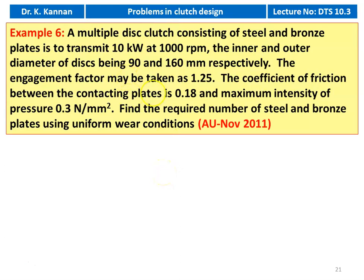A multiple disc clutch consisting of steel and bronze plates is to transmit 10 kW at 1000 rpm. The inner and outer diameter of the disc are 90 and 160 mm respectively. The engagement factor may be taken as 1.25. The coefficient of friction between the contacting plates is 0.18. The maximum intensity of pressure is 0.3 N per mm square. Find the required number of steel and bronze plates using uniform wear conditions.